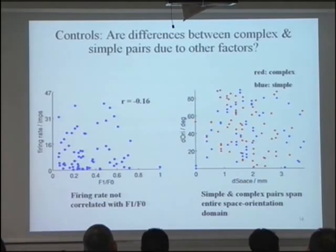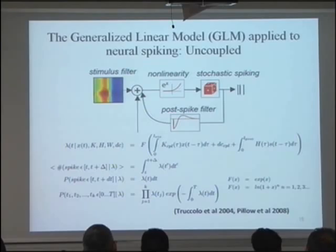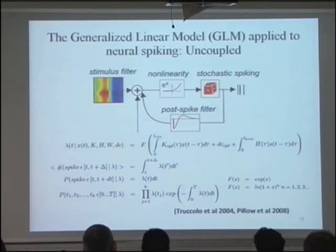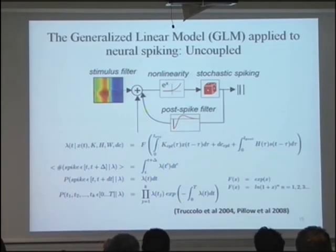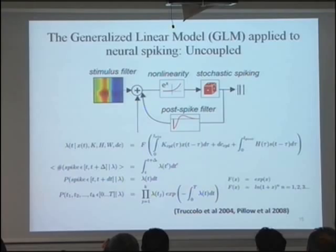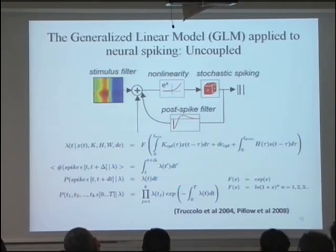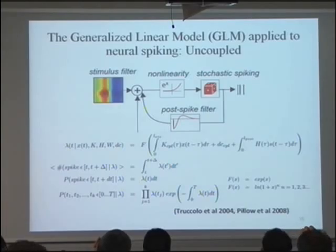That concludes the first part. Now I'm fitting the GLM model to the data. The GLM models the intensity function of a neuron by convolving the visual stimulus — which is an indicator matrix — with a filter, adding a DC term for spontaneous activity, and injecting a post-spike filter mimicking refractory period or bursting. This sum is passed through a nonlinearity. I chose the exponential, so these components can be interpreted as gain factors because they split into a product. This is the uncoupled model with only the visual filter and post-spike filter.